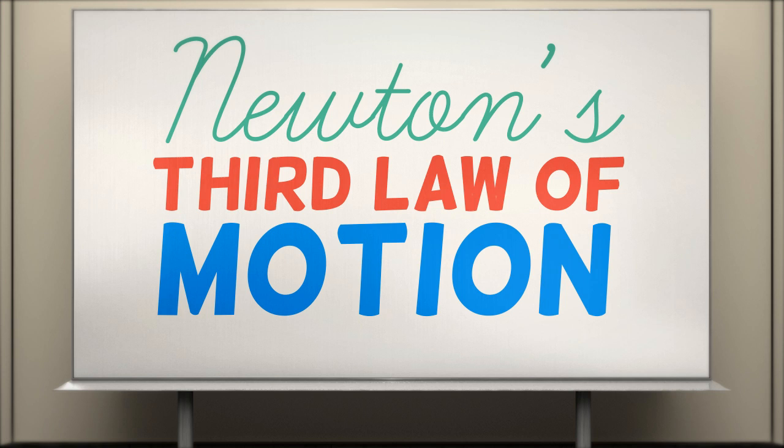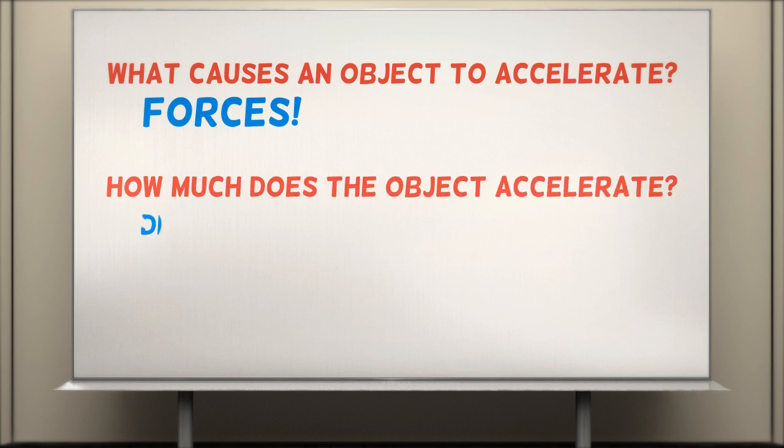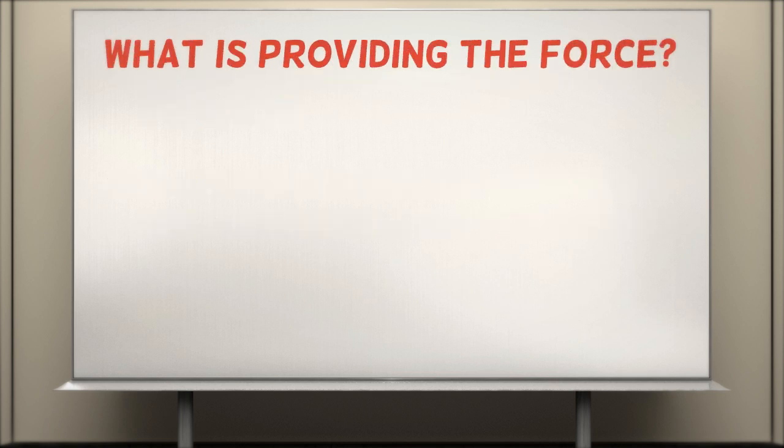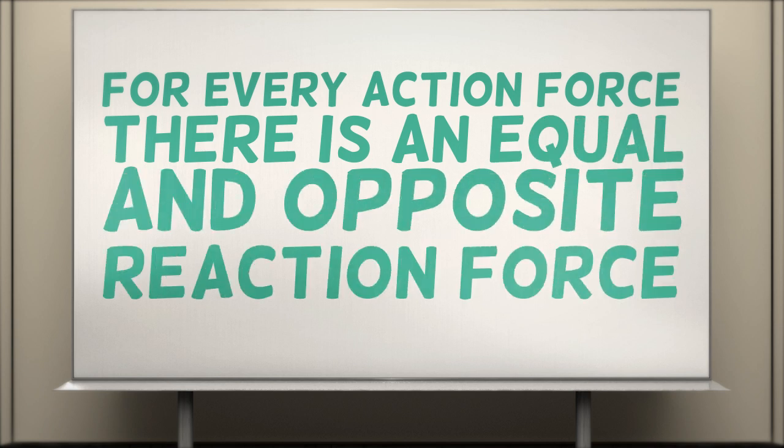So far, we have answered our two biggest questions. First, what causes an object to accelerate? And second, by how much does the object accelerate given a certain force? It might seem like we have asked the two most important questions, but Newton thought of one more question to answer, which most people might not have thought of. The first two laws are centered on an object that is accelerated by a force. But what is providing the force in the first place? Newton's third law is that there is no such thing as a lone force. All forces come in pairs. In technical language, for every action force, there is an equal and opposite reaction force.